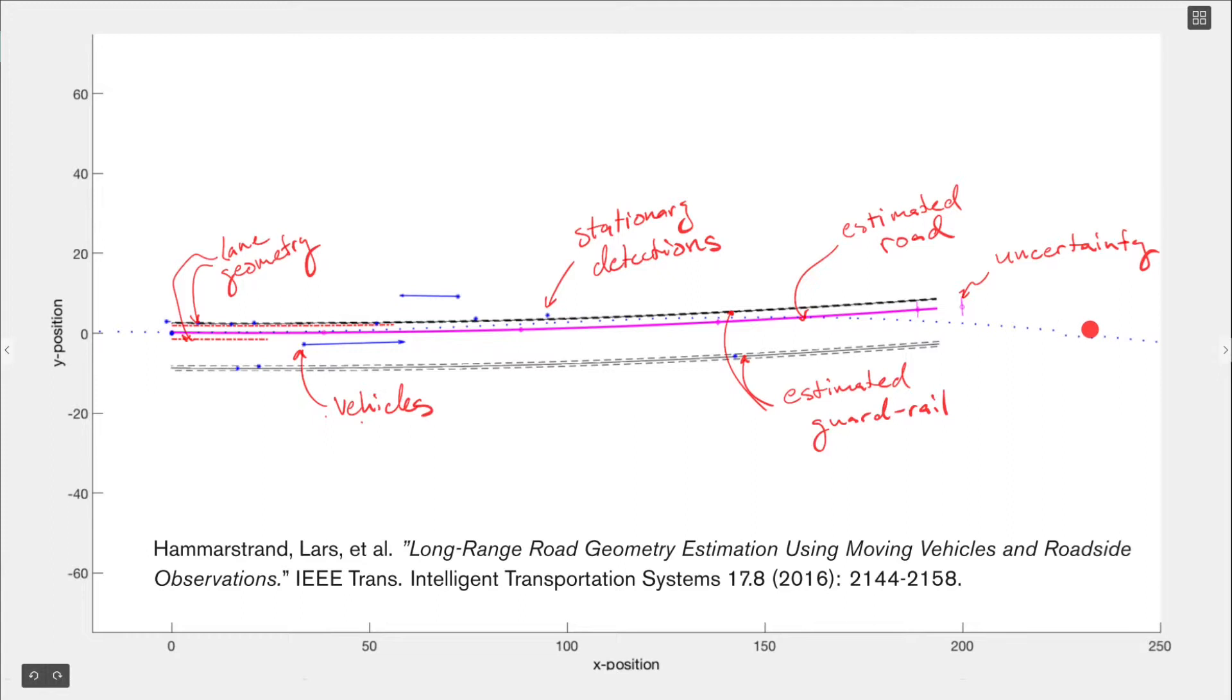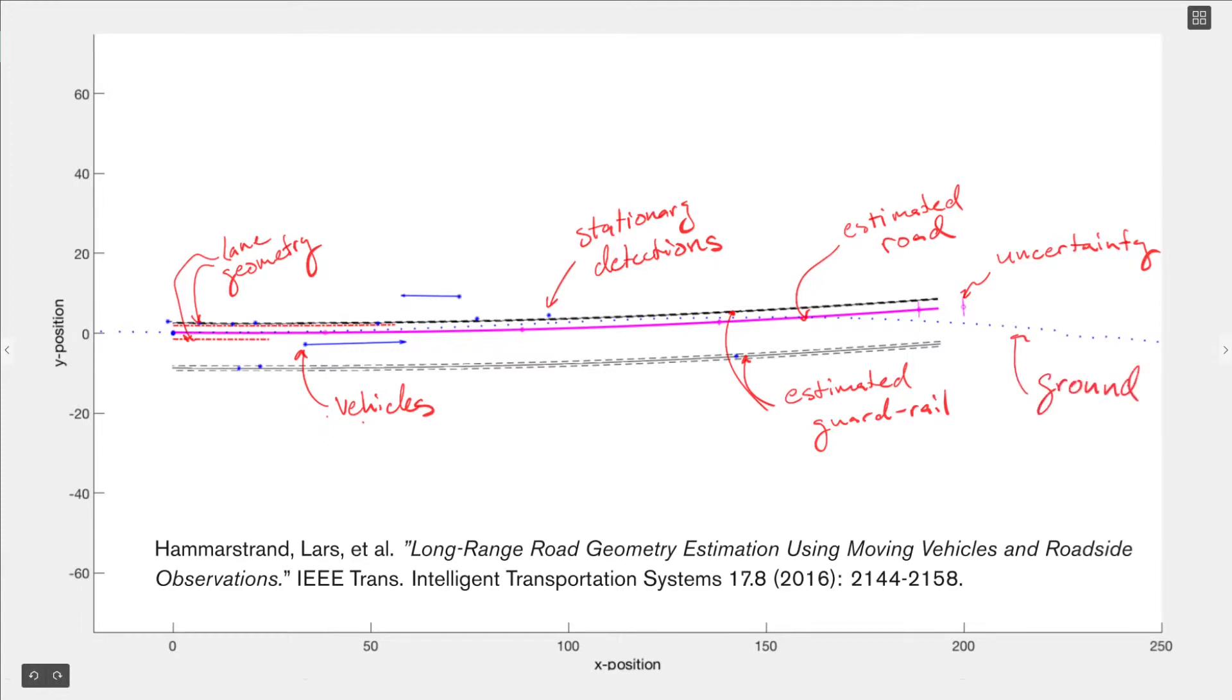The blue dots here is the ground truth position of the middle of the host lane, which is what we like to describe. We will plot the results having our host vehicle at the origin, always pointing to the right. So if we run our filter, it could look something like this.